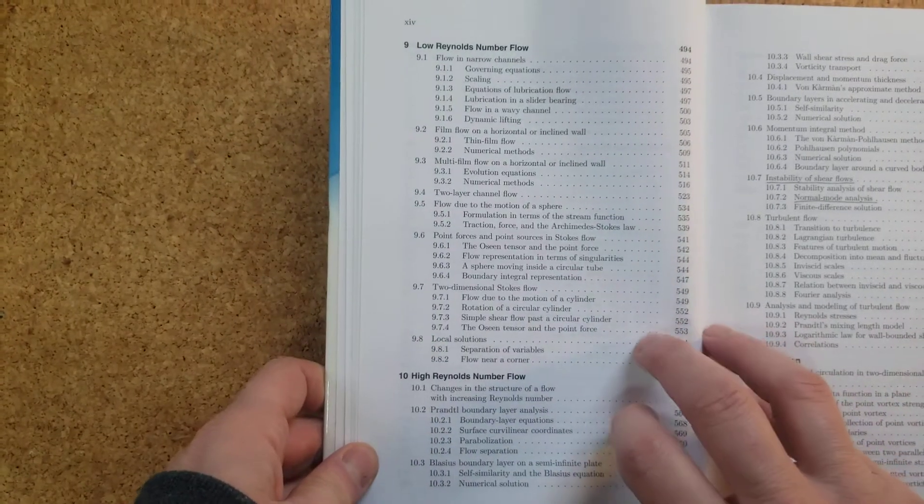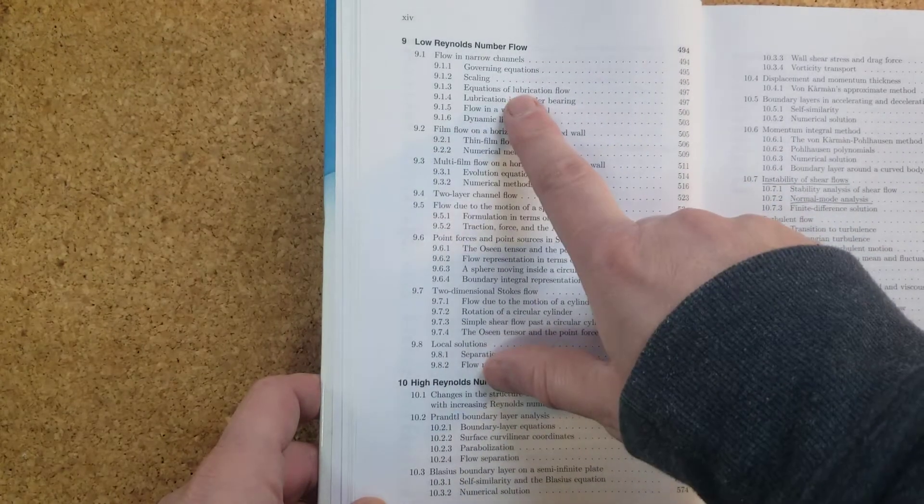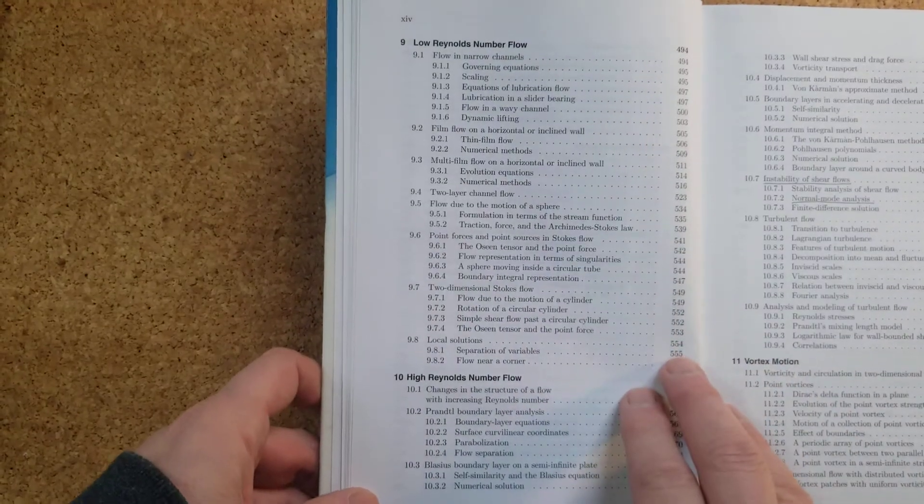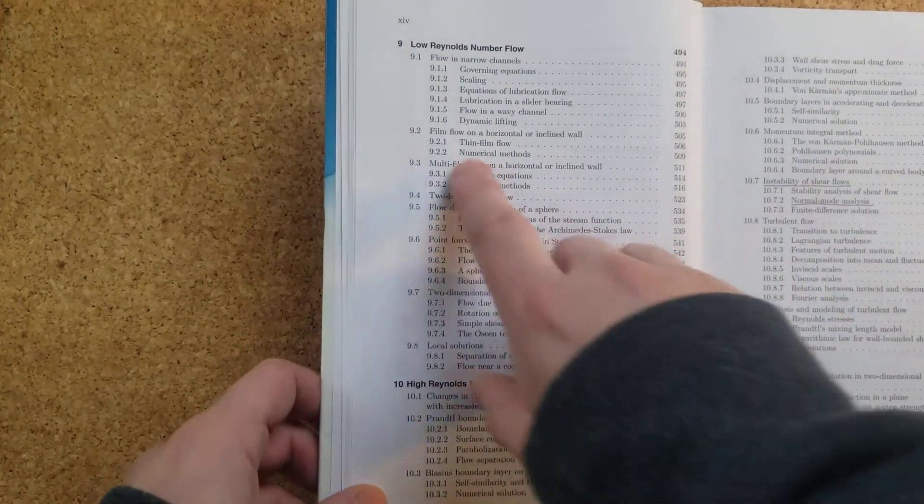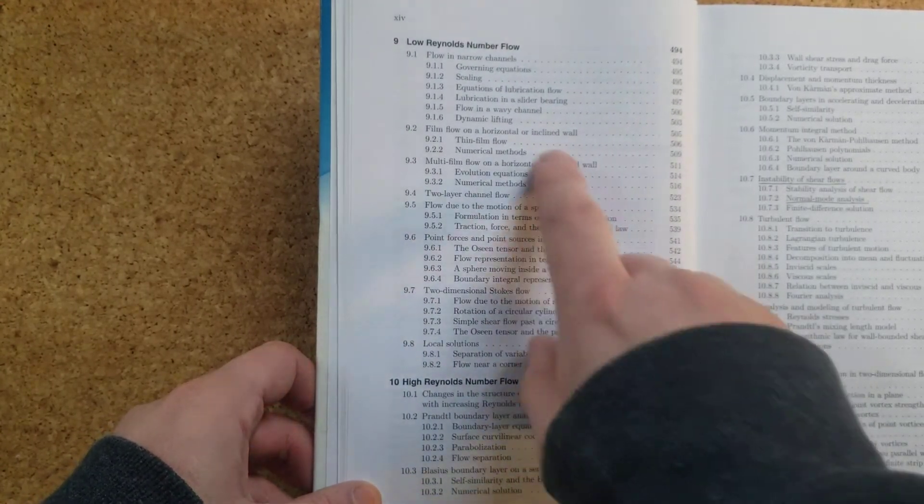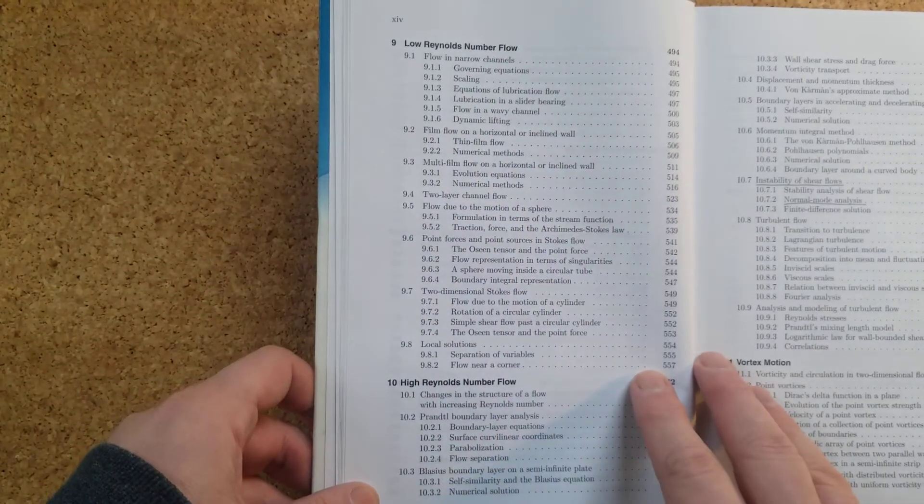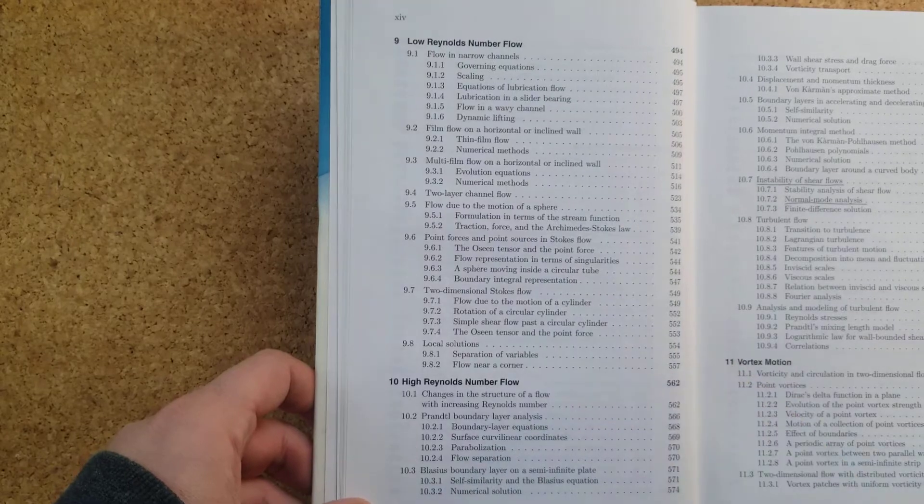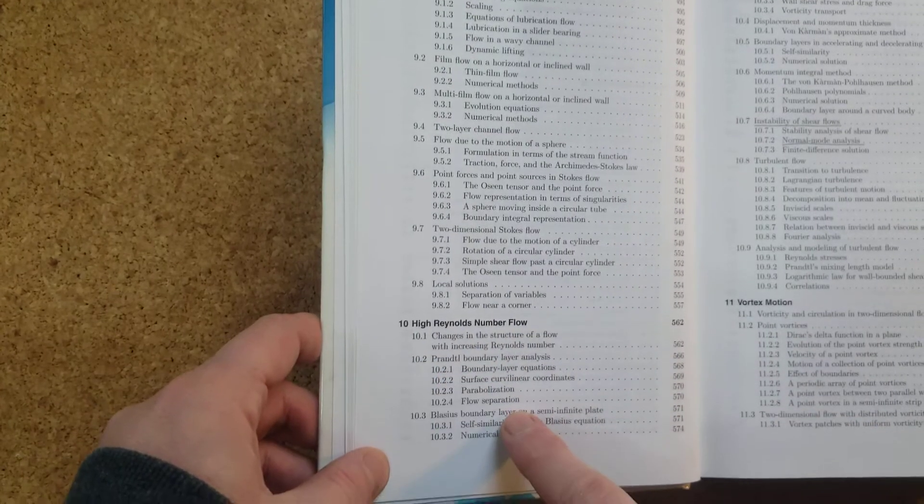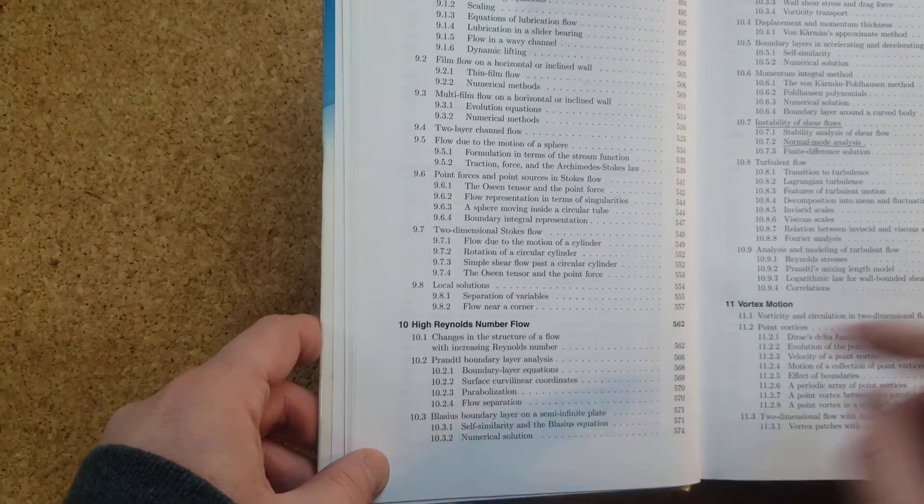And then what I really like is that there are two distinct chapters, one on low Reynolds number fluid mechanics and the other one on high Reynolds number flows. So for the low Reynolds number flows, it focuses both on flows in narrow channels, but also thin flows, and quite a good treatment of flows over inclined channels. And for high Reynolds number flows, of course, the initial focus is on the Prandtl boundary layer theory, specifically on the Blasius flow.